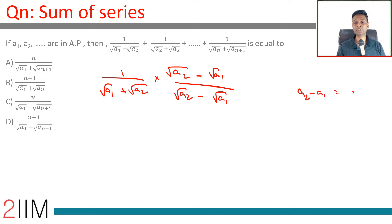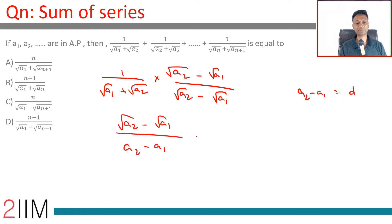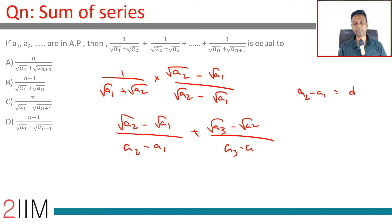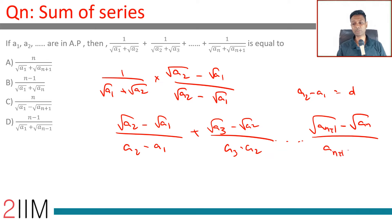I write it as a2 - a1 because a2 - a1 is d, the common difference. So this becomes (√a2 - √a1)/(a2 - a1), plus (√a3 - √a2)/(a3 - a2), all the way to (√a_{n+1} - √a_n)/(a_{n+1} - a_n). Each denominator equals the common difference d.